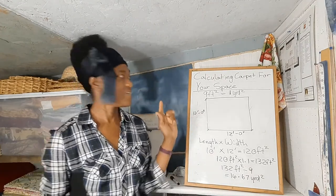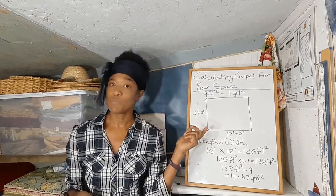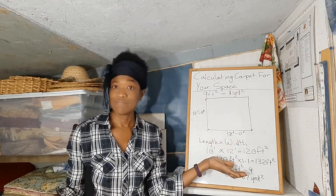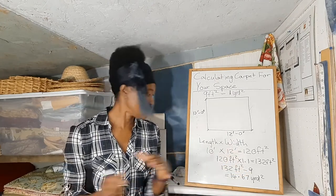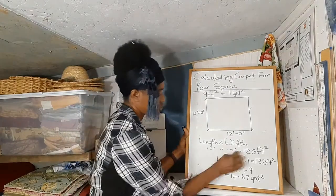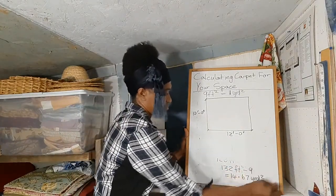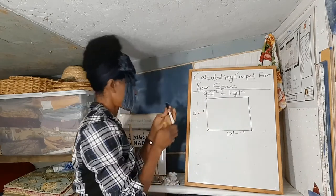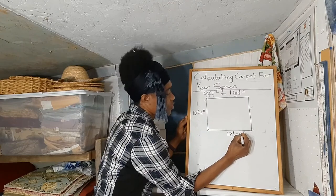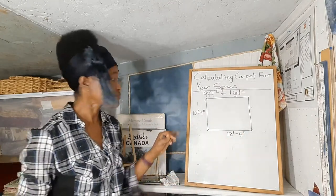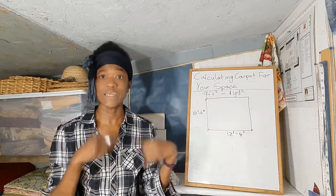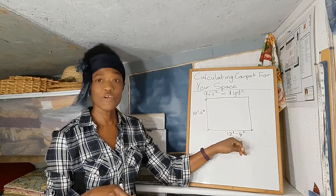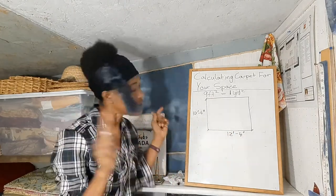Suppose you had a room that's 10 feet 6 inches by 12 feet 4 inches. What would you do? Let's go through that quickly. What we'll have to do is convert everything to inches — convert 10 feet 6 inches to inches, and 12 feet 4 inches to inches.